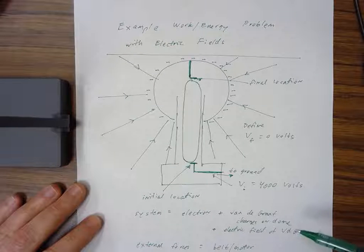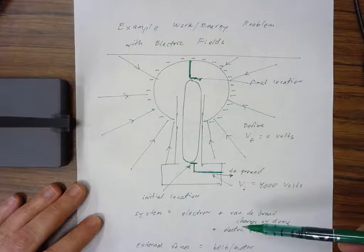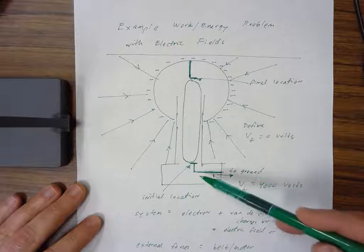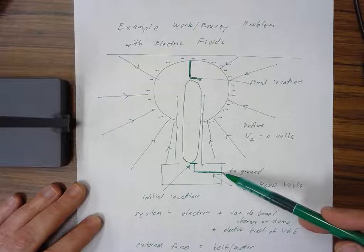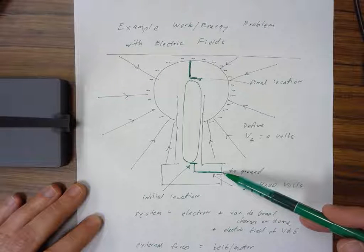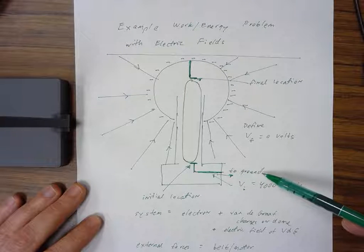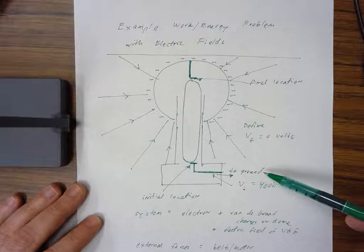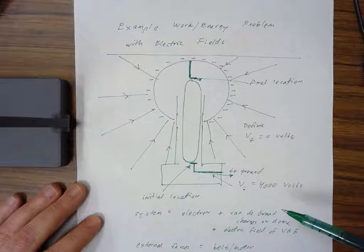You might be wondering where that negative charge comes from—it actually comes from the ground. This terminal inside the base connects ultimately to the plug. The Van de Graaff is plugged into an outlet which has a ground wire, so basically the earth is supplying that negative charge.